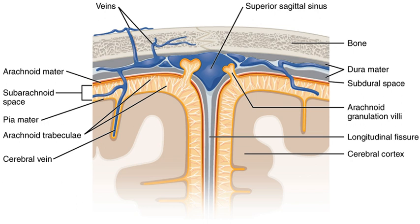The middle element of the meninges is the arachnoid mater, so named because of its spider-web-like appearance. It cushions the central nervous system. This thin, transparent membrane is composed of fibrous tissue and, like the pia mater, is covered by flat cells also thought to be impermeable to fluid. The shape of the arachnoid does not follow the convolutions of the surface of the brain and so looks like a loosely fitting sac. In the region of the brain, a large number of fine filaments called arachnoid trabeculae pass from the arachnoid through the subarachnoid space to blend with the tissue of the pia mater.